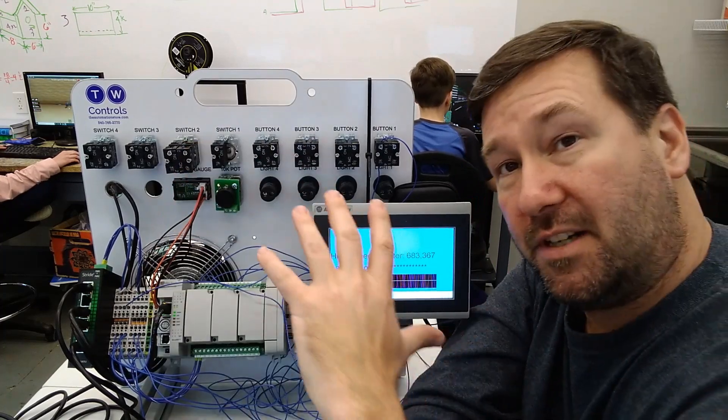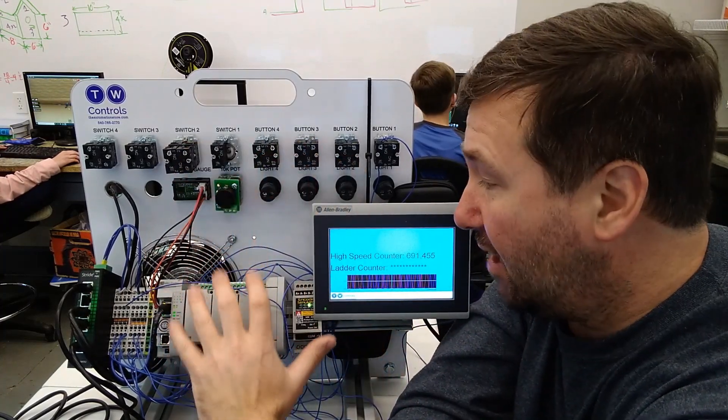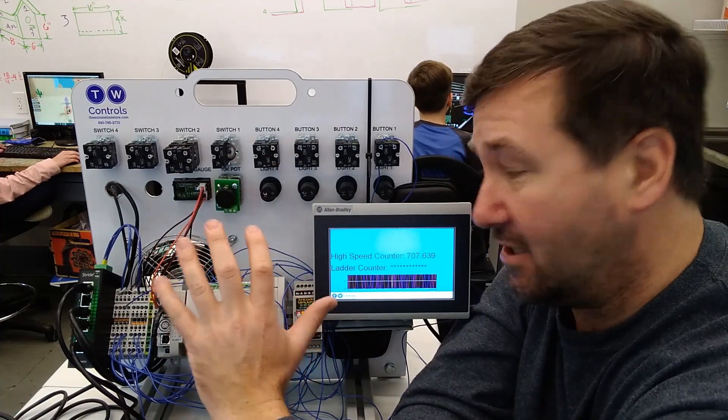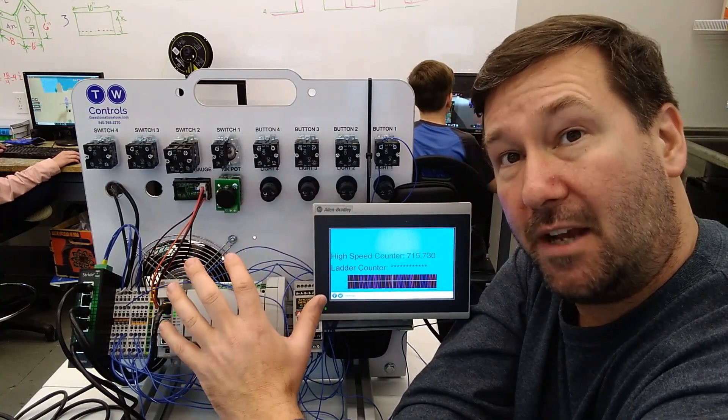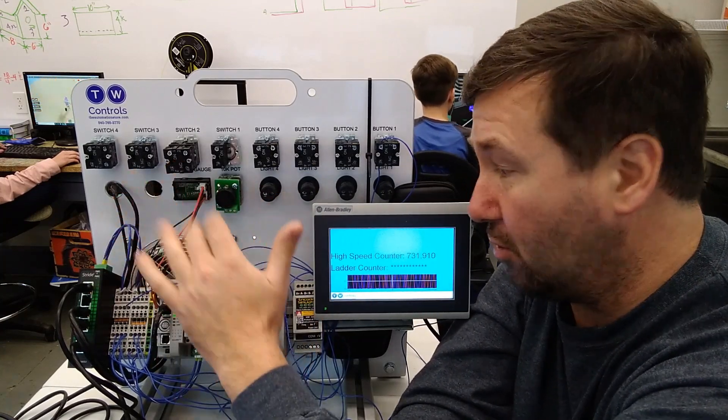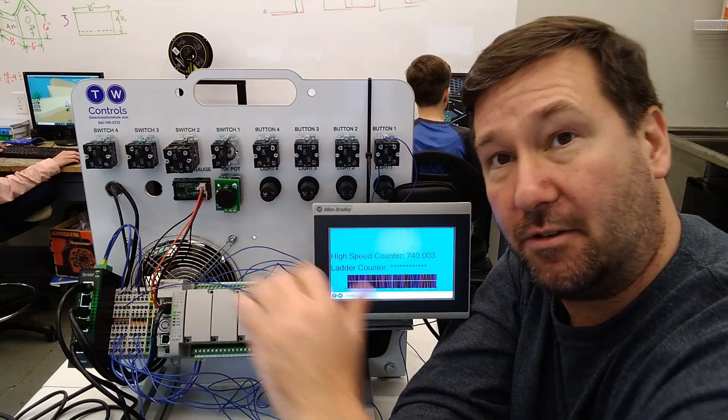In our previous video, we talked about how to configure your micro 850 PLC for a high speed counter application. Actually, it works with any micro 800 PLC that has a high speed option module or if it has high speed inputs on the base unit.